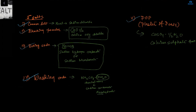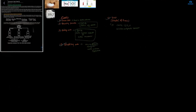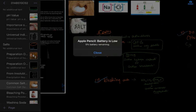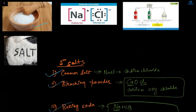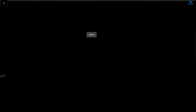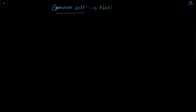Common salt is NaCl — Na means sodium, Cl means chloride, so the chemical name is sodium chloride. NaCl can be broken down into three products: Cl₂ (chlorine gas), NaOH (sodium hydroxide — an alkali, basic in nature), and H₂ (hydrogen gas). Because 'chlor' represents chlorine gas and 'alkali' represents NaOH, the whole process is known as the chloralkali process.